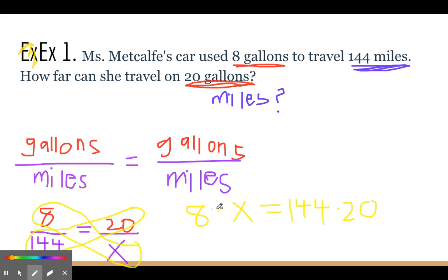So 8 times X, we just have an X here. 144 times 20, we get 2,880. We still want to get X alone, so we divide both sides by 8.